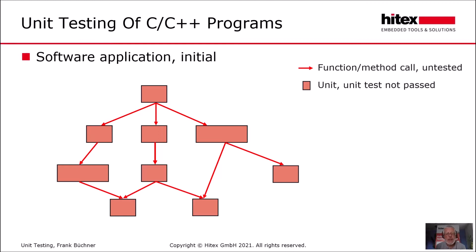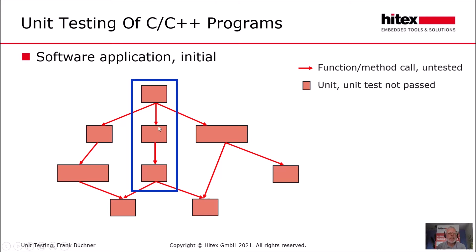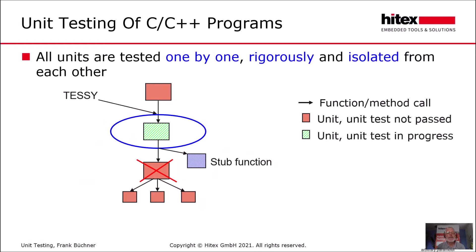Having clarified this, we can think of a software application looking like this. The red rectangles represent the units, modules, functions, or methods, and the red arrows represent the calling hierarchy. Unit testing means testing in isolation from the rest of the application. Each unit is tested separately and rigorously.